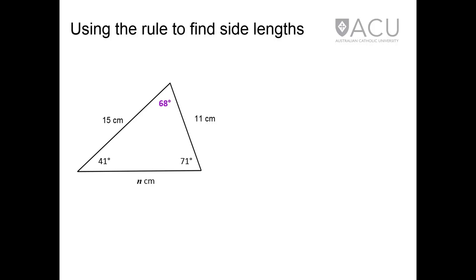To find the length N, the appropriate values are substituted into the equation. Each term is evaluated, and then, using the correct order of operations, N squared is calculated. The value of N is then found by taking the square root.